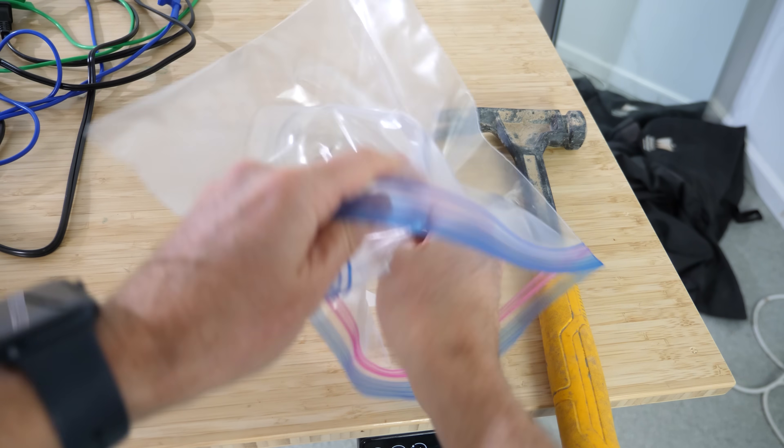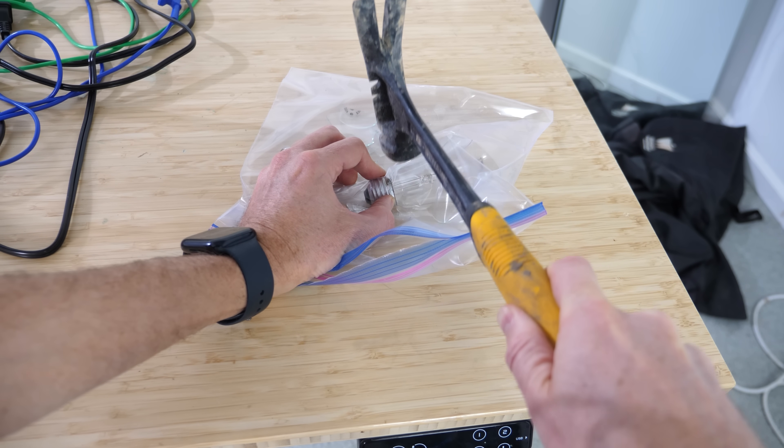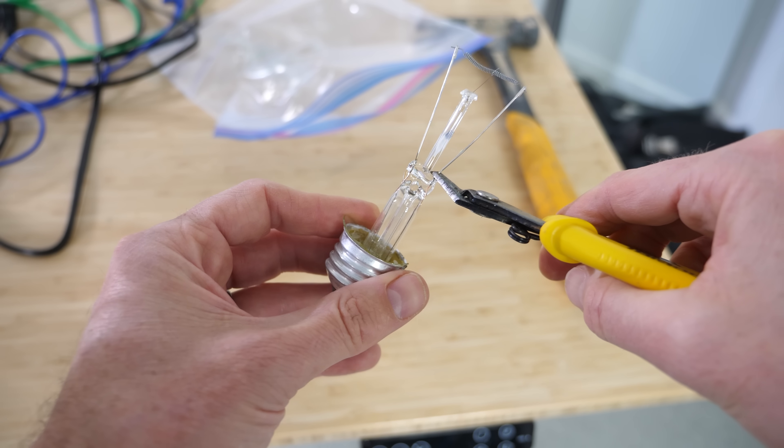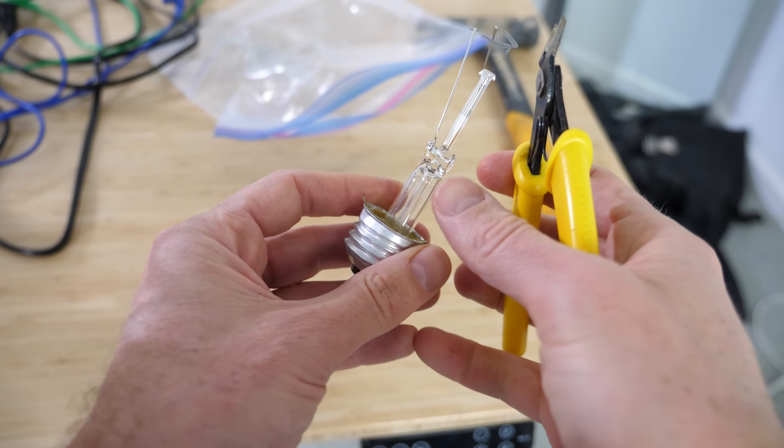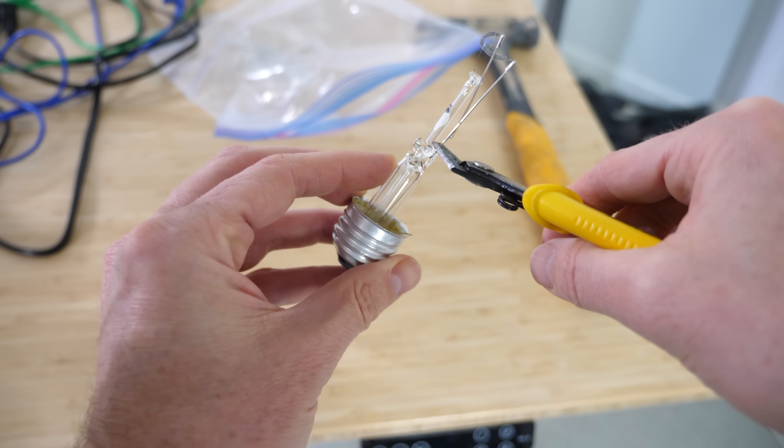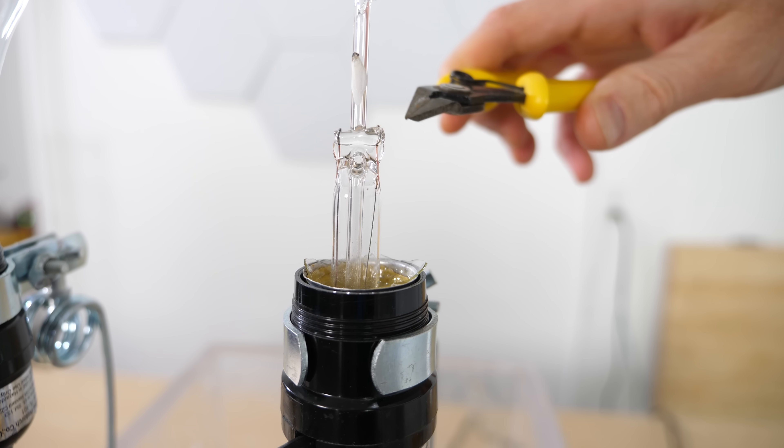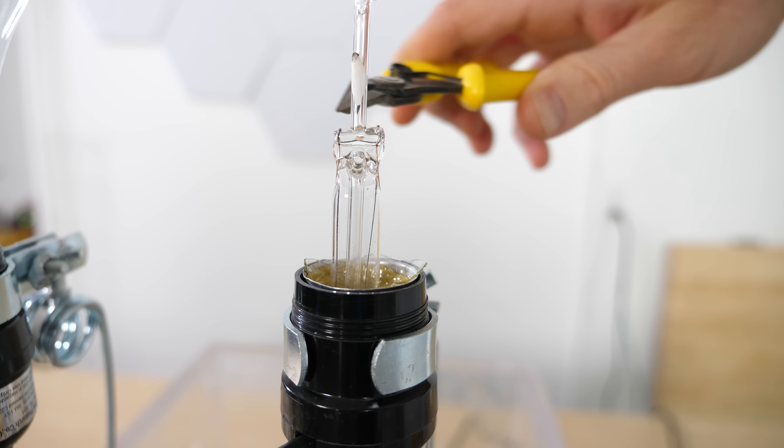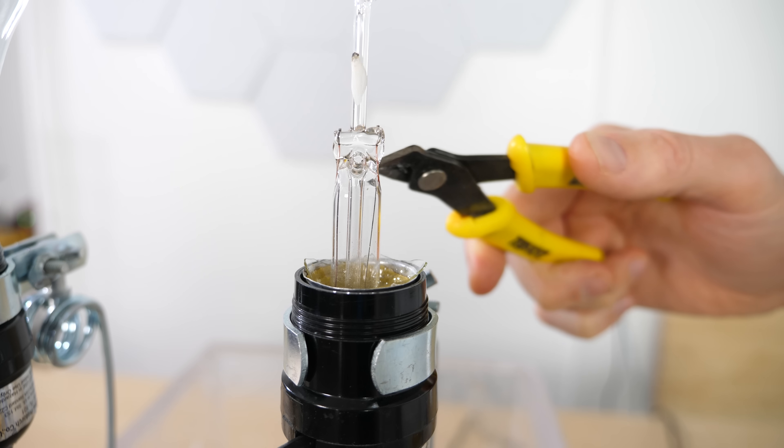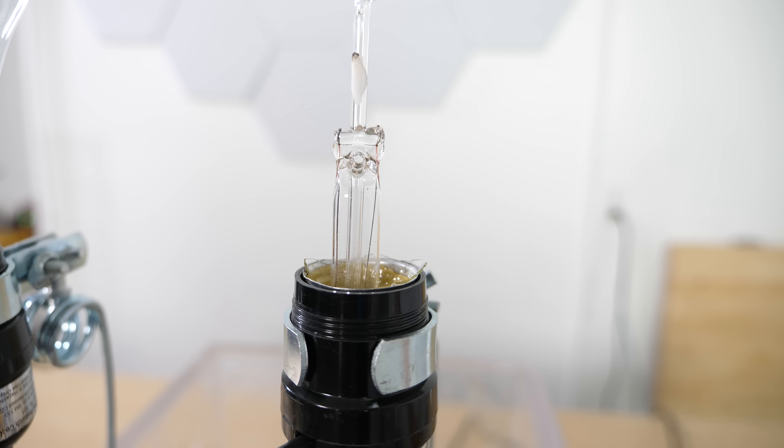I'm just gonna put this in here. Okay, so this is exactly what we need here. Now I'm just gonna snip these wires at the base. Now the only way for these two wires to complete the circuit is for the current to pass through the glass itself.